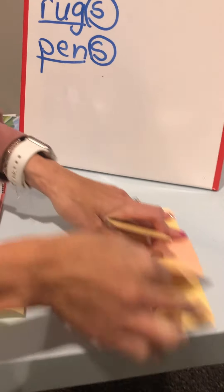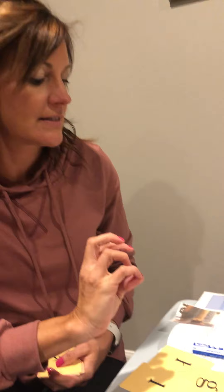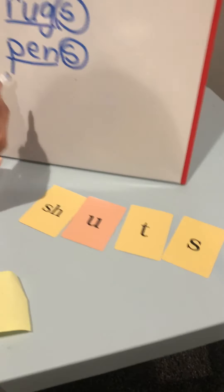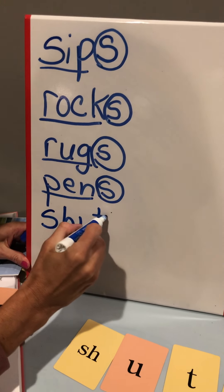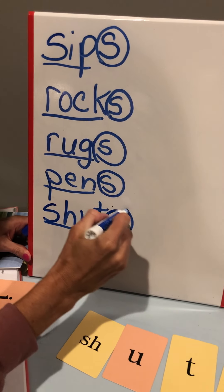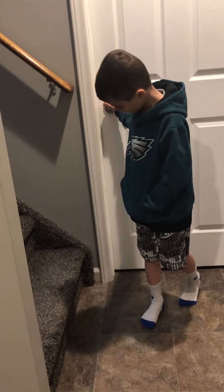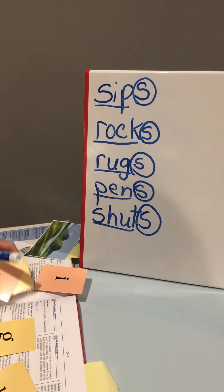Okay, next one — tap it out first. He's patiently waiting over here. Okay, here we go, tap it out first: shuts. So we'll write it down first, underline the base word shut, circle the suffix S, and it means he shuts the door. Right now there he goes — he shuts the door. Great job, thank you.